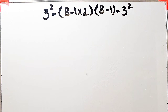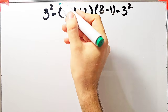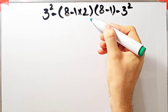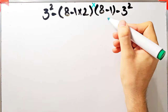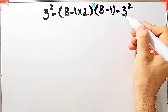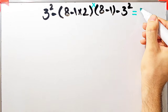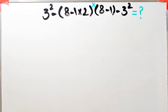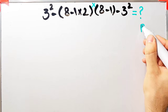Let's solve another question about the PEMDAS rule. We have: 3 to the power of 2, minus open parenthesis 8 minus 1 times 2 close parenthesis, times open parenthesis 8 minus 1 close parenthesis, minus 3 to the power of 2. What is the answer? To solve this we need to follow the PEMDAS rule.